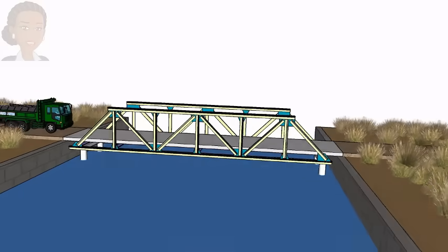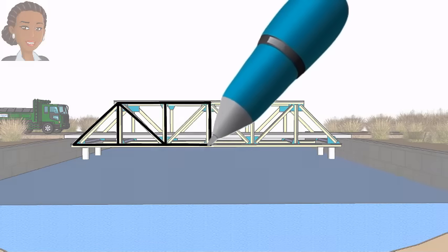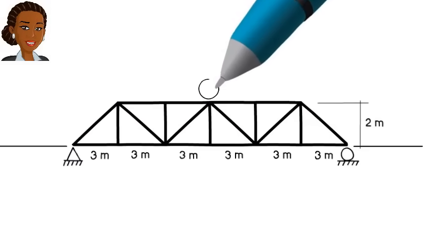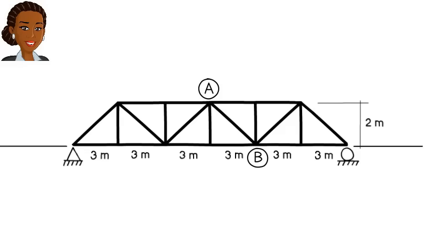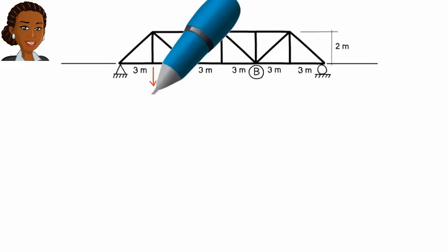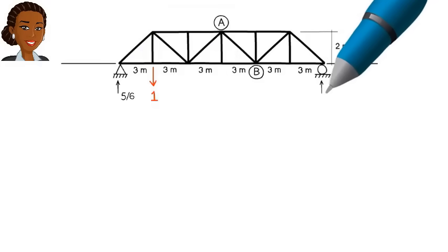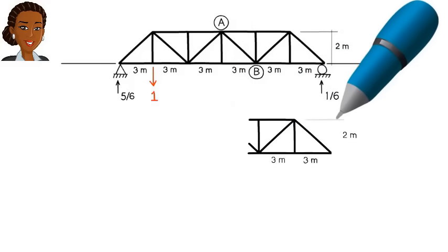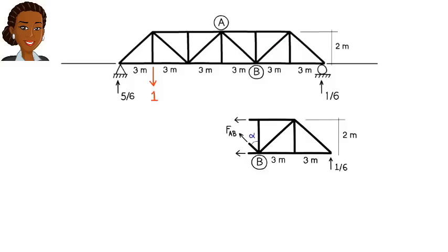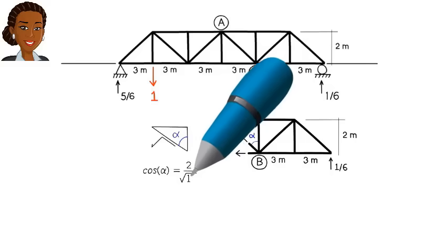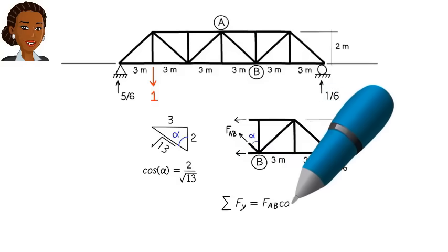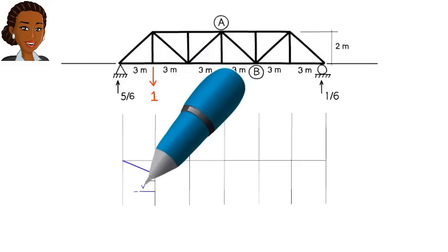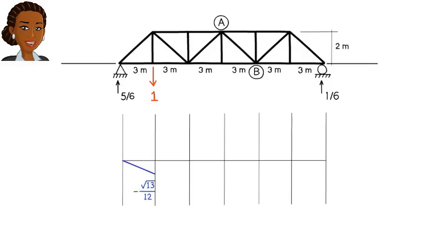Let's draw the influence line for one of the truss members. Say, for member AB. To do so, we start by placing a unit load at this joint and calculate the support reactions. Then we cut the truss through member AB, draw the free body diagram for the right segment of the structure, and sum the forces in the y direction in order to determine the axial force in AB. We then plot this value as a point in our line graph, and use a straight line to connect it to the starting point of the graph.